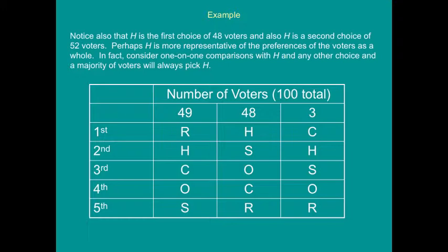Notice also that H is the first choice of 48 voters, and the second choice of 52 voters — that's the 49 voters who put H second plus the 3 others who also put H second (49 + 3 = 52). So H figures in first or second place among everybody. Perhaps H is more representative of the group's overall preferences. In fact, in one-on-one comparisons between H and any other choice, a majority of voters will always pick H.